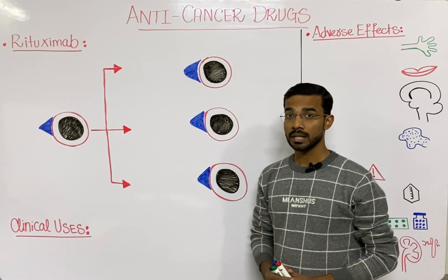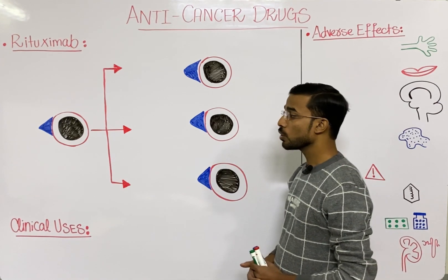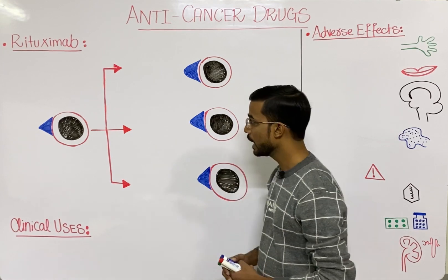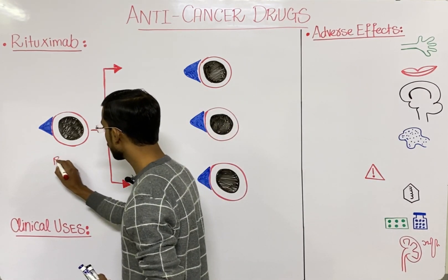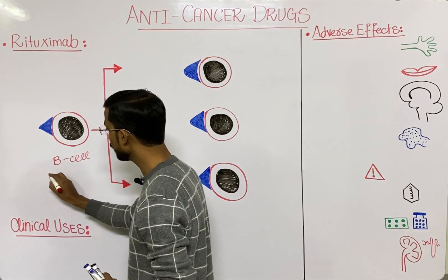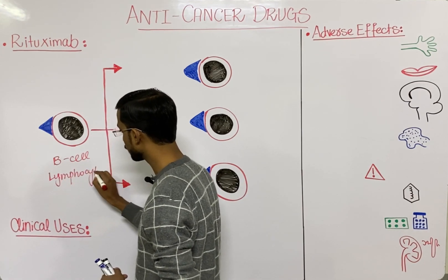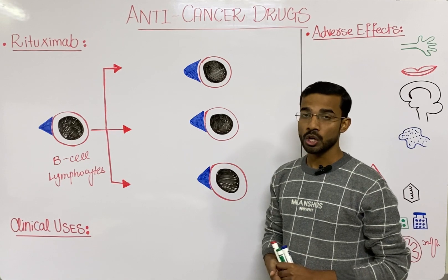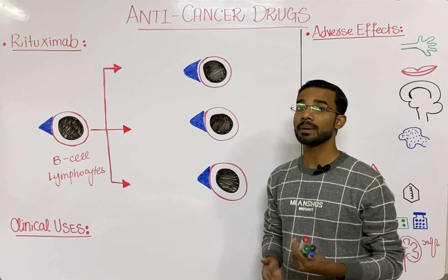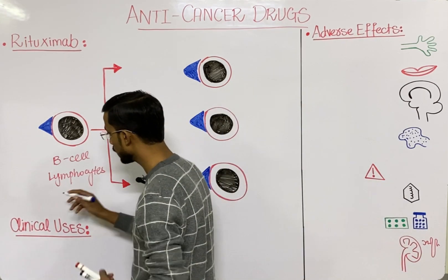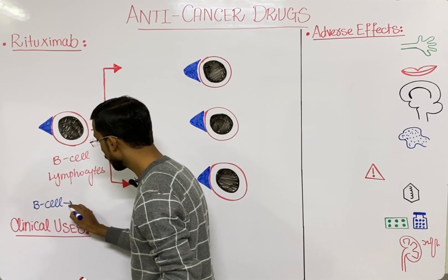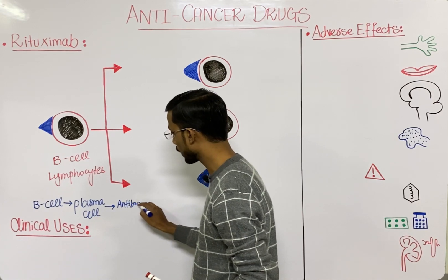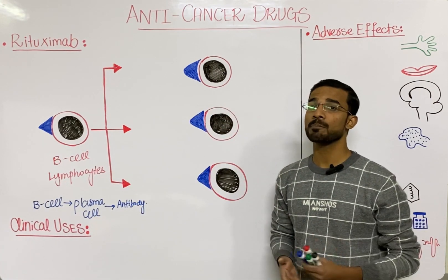First of all, we will discuss the most important mechanism of Rituximab. The cells that are susceptible to Rituximab, or anti-CD20 antibodies, are the B cells — B lymphocytes. You will see two types of lymphocytes: B lymphocytes and T lymphocytes. B lymphocytes ultimately convert into plasma cells and form different antibodies. That is the normal process that happens in our body.